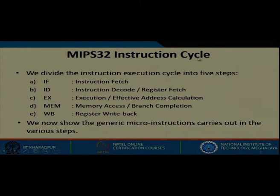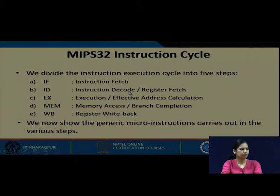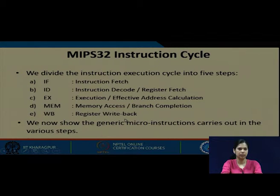The MIPS 32 instruction cycle is divided into five steps: instruction fetch (IF), instruction decode or register fetch (ID), execute where effective address calculation is also done (EX), memory access or branch completion (MEM), and write back to a register (WB). We will now show the generic micro-operations carried out in these various steps.